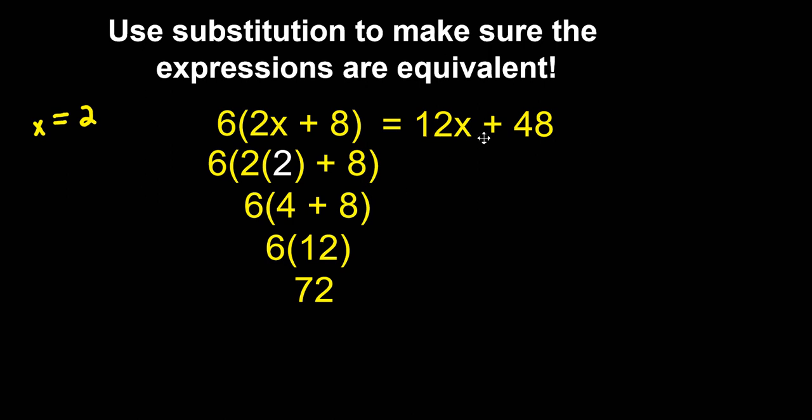I'm going to do the same thing on the other side. Replace the variable with 2. 12 times 2 is 24 and 24 plus 48 is 72. Notice we got the same value that tells me that this expression is equivalent to this expression and it also shows me that my simplified version was equal to the original expression.